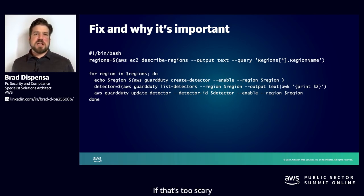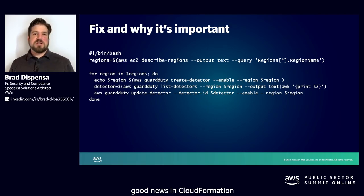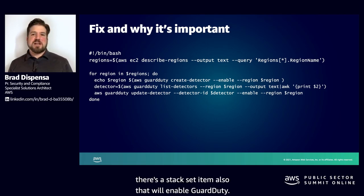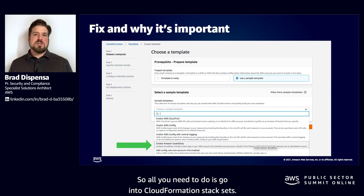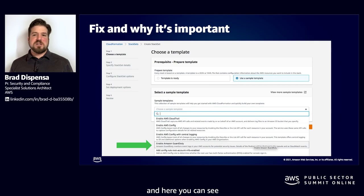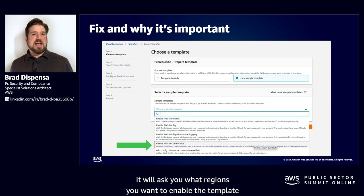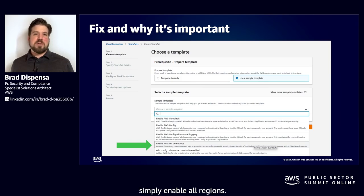If shell scripts aren't your thing, good news: in CloudFormation there's a stack set item that will enable GuardDuty. All you need to do is go into CloudFormation stack sets, choose a sample template — here you can see the enable GuardDuty sample template — and when you go to enable it, it will ask which regions you want to enable the template. Simply enable all regions.